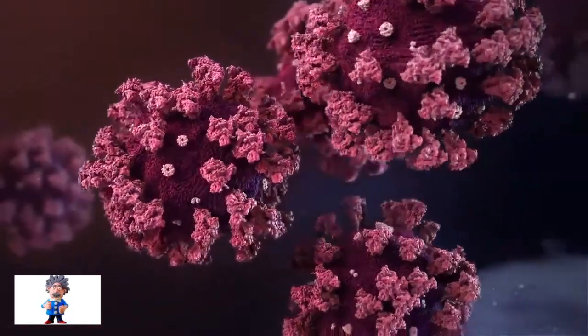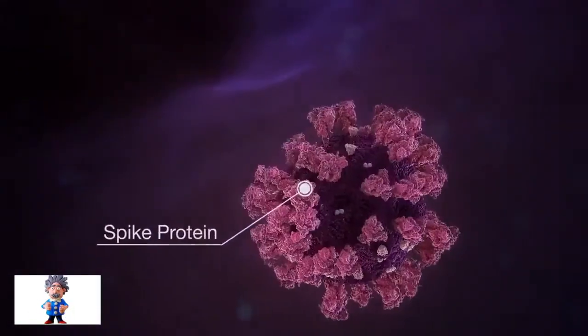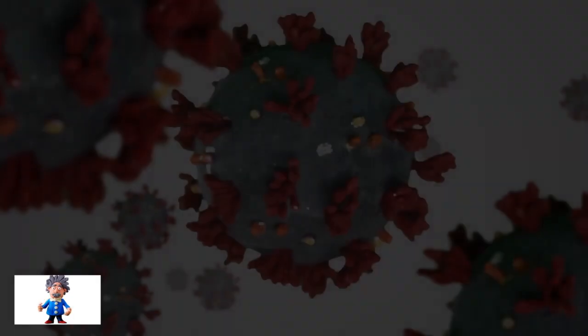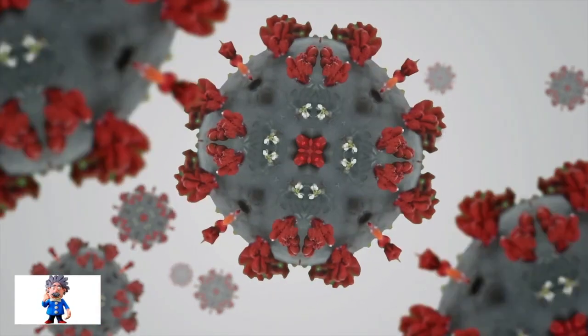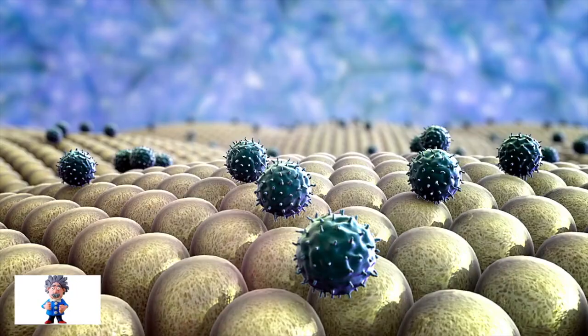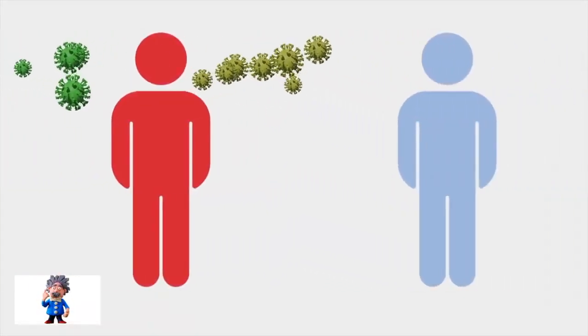Omicron has a total of about 30 mutations on its spike protein, which is the structure the coronavirus uses to gain entry into human cells. Most of these mutations are found in areas which have previously been linked to increases in immune evasion and viral transmission.